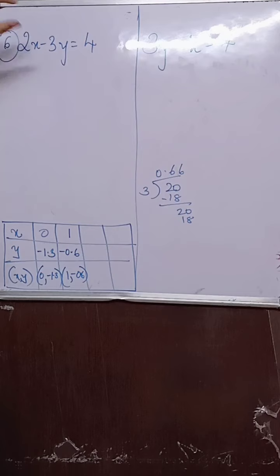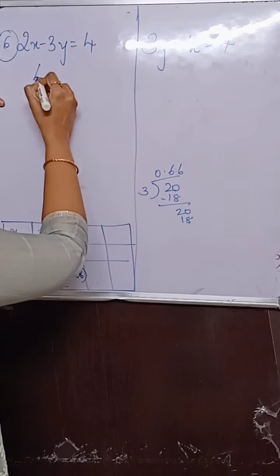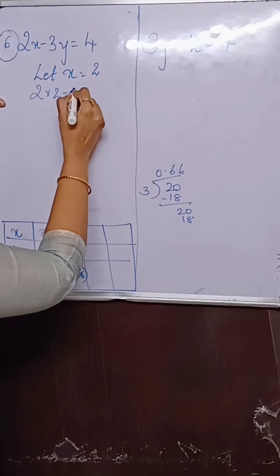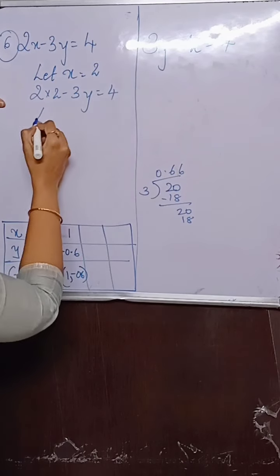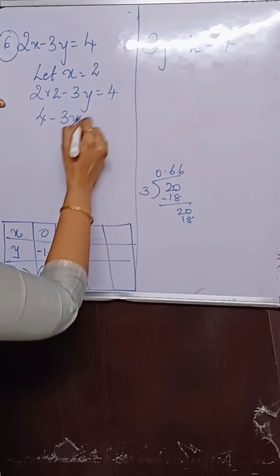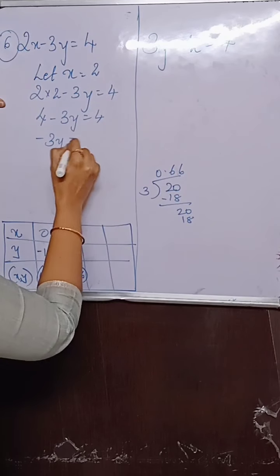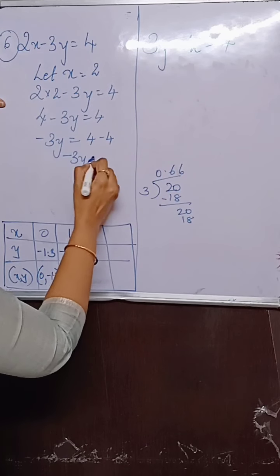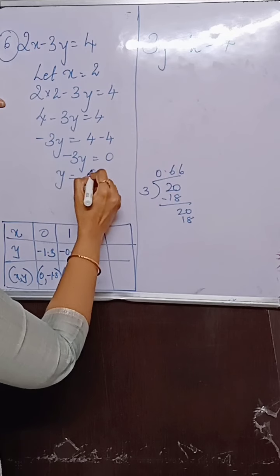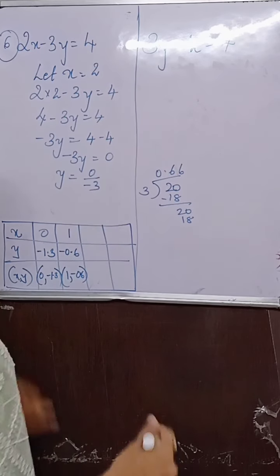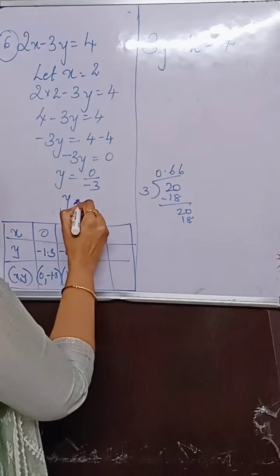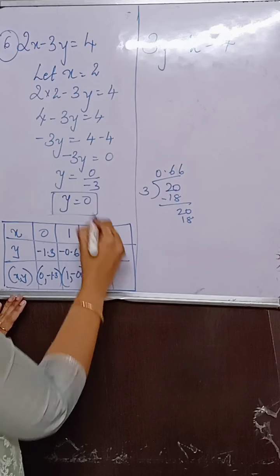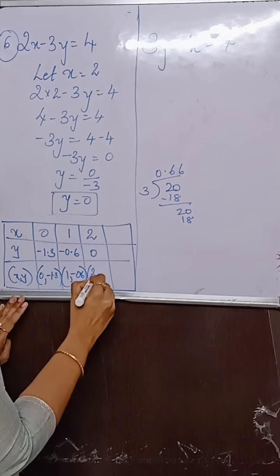Let us try x as 2. So 2 into 2 minus 3y equals 4, giving 4 minus 3y equals 4, so minus 3y equals 0, therefore y equals 0. This was a good selection! When x is 2, y is 0. Ordered pair: 2 comma 0.